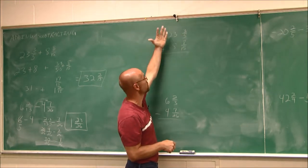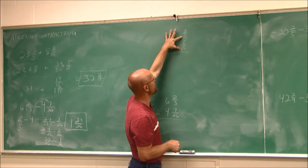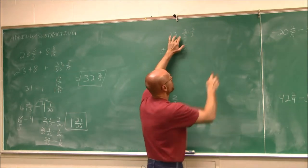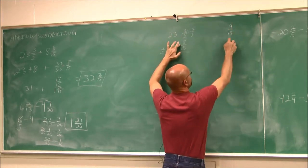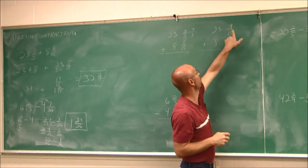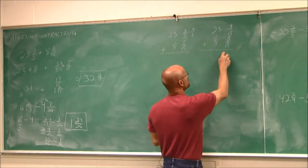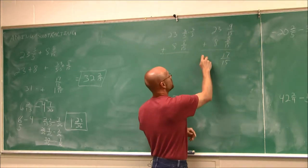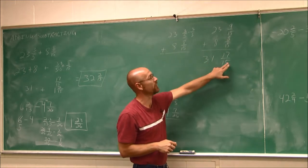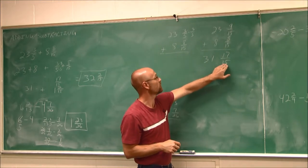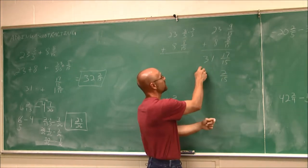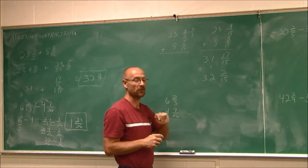Doing it vertically might work a little nicer. The first thing we do is deal with those fractions, just like before: 3/5 and 8/15 need a common denominator. I multiply by 3/3 to get 9/15, and we have 8/15. With the whole numbers 23 and 8, adding vertically: 9 and 8 gives me 17, and 23 and 8 gives me 31. This is an improper fraction — we can't have a mixed number and an improper fraction at the same time. 15 goes into 17 once with a remainder of 2; add that 1 to 31, and we get 32 and 2/15 — the same answer as before.